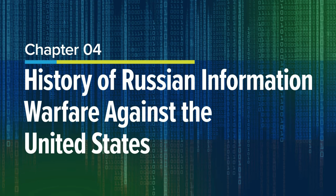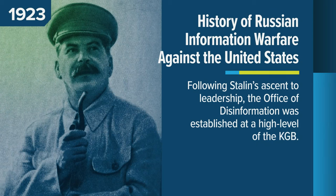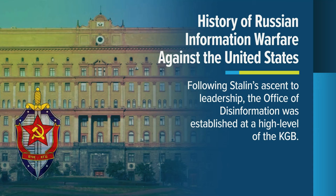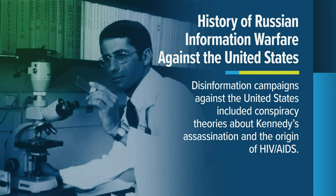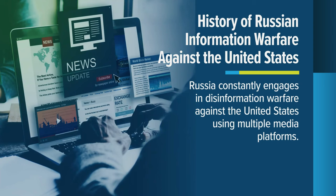Chapter 4: History of Russian Information Warfare Against the United States. Russian disinformation operations became commonplace beginning in 1923, following Joseph Stalin's ascent to leader of the Soviet Union and the establishment of the Office of Disinformation. This office was a high-level section of the KGB, the country's primary security agency, that existed throughout the Soviet era. Major disinformation campaigns against the United States included conspiracy theories that John F. Kennedy was assassinated by the CIA and that HIV-AIDS was developed in U.S. labs. The USSR planted newspaper articles in 80 different countries alleging the AIDS conspiracy. Major information warfare campaigns against the United States restarted in 2013, and Russia is constantly engaging in disinformation warfare using diverse media formats.